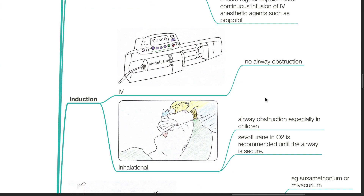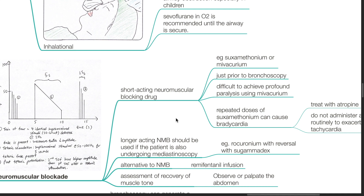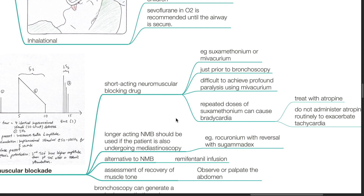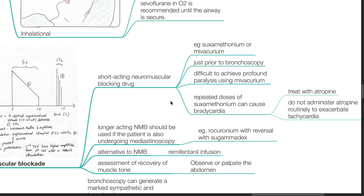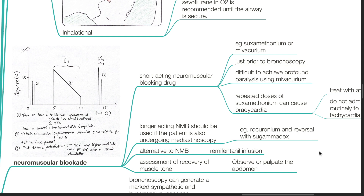Induction: IV induction if there is no airway obstruction; inhalational induction if there is airway obstruction, especially in children. Sevoflurane in oxygen is recommended until the airway is secure. Neuromuscular blockade: short-acting neuromuscular blocking drugs such as suxamethonium or mivacurium just prior to bronchoscopy. It is difficult to achieve profound paralysis using mivacurium. Repeated doses of suxamethonium can cause bradycardia; treat with atropine. Do not administer atropine routinely to avoid exacerbating tachycardia. Longer-acting neuromuscular blockers should be used if the patient is also undergoing mediastinoscopy, such as rocuronium with reversal by sugammadex.